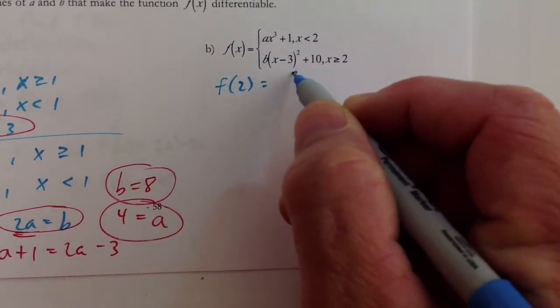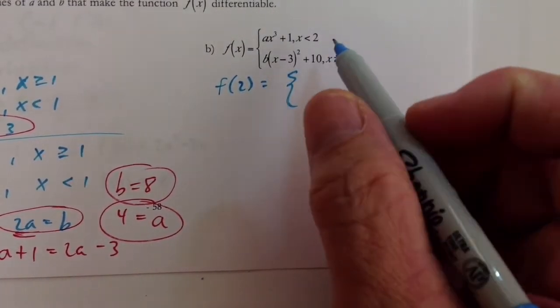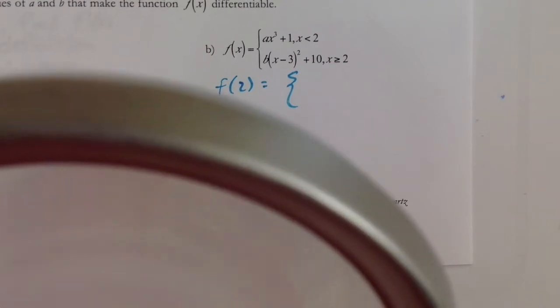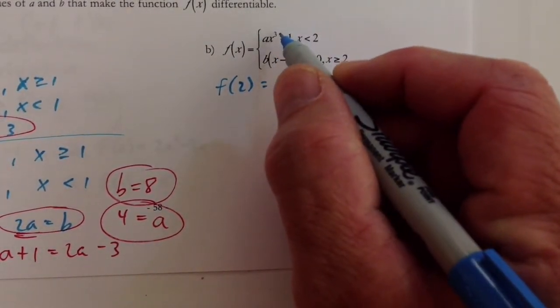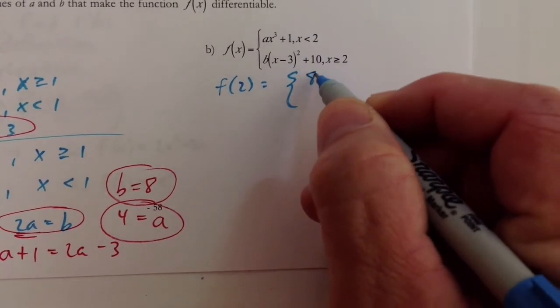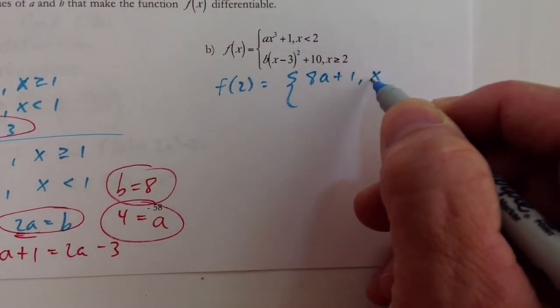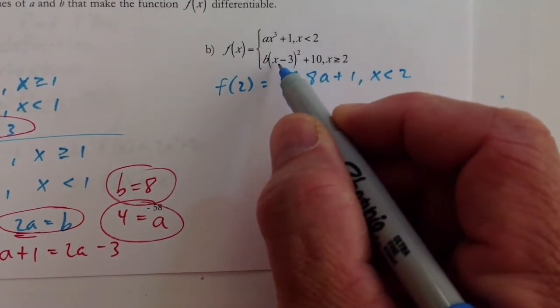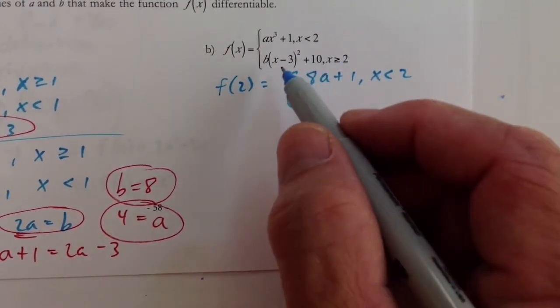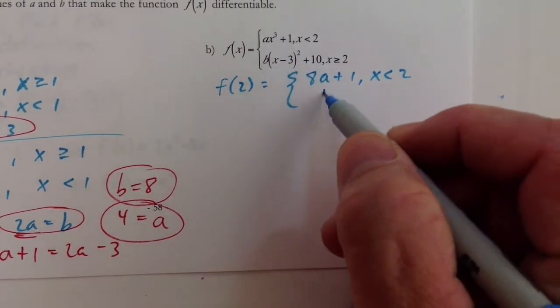F at 2. Let's do our little thing here. And is that an ax cubed? Yeah. So that's an x cubed. So that's 2 cubed is 8, 8a plus 1 for x values that are less than 2. And then when we replace x with 2 here, 2 minus 3 is negative 1. Negative 1 squared is 1, so we just have b.